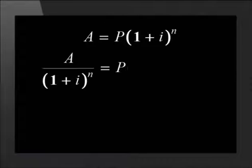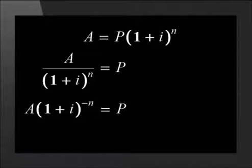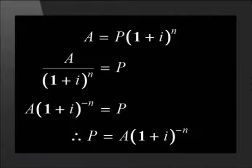We can also use a formula to get the value of P directly. We do this by rearranging the formula for compound interest. Let's look at the rearrangement. We divide both sides of the equation by the bracket to get P on its own. Then we bring the bracket to the top and by doing this the power of n changes to negative n. This means that P equals A times (1 plus i) to the power of negative n. Using this formula will save you time in a test or examination.